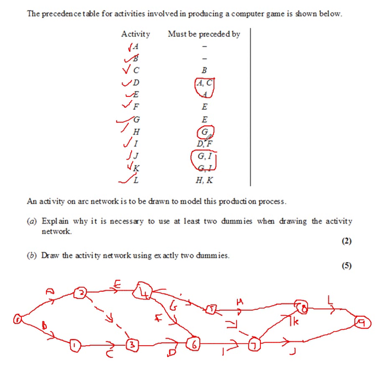whereas J and K depend on G and I. So this conflict of interest is where we need the dummies. Drawing an activity network using exactly two dummies—this is to make sure you don't start putting dummies everywhere. Two dummies are the two we've added there. Sorry if that's a bit of a mess, but that's the best I'm going to do.